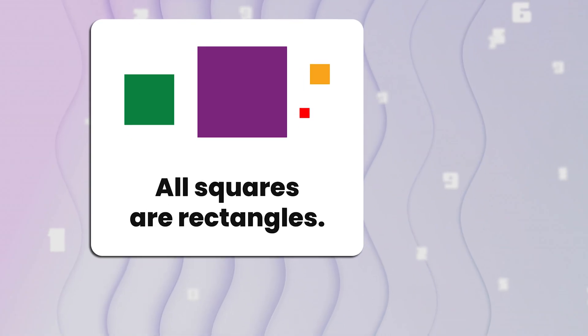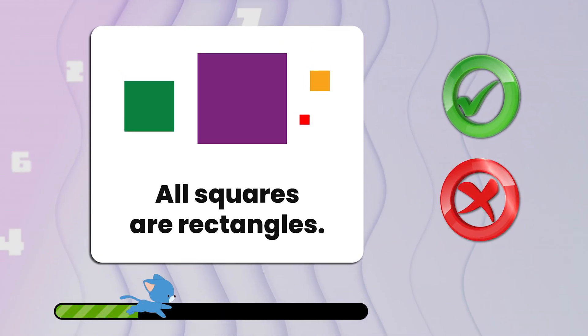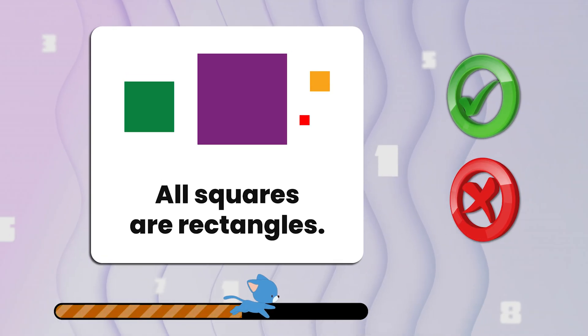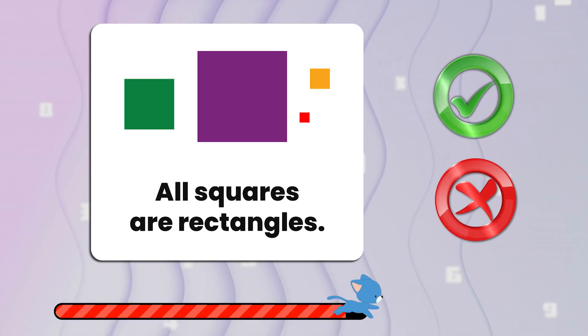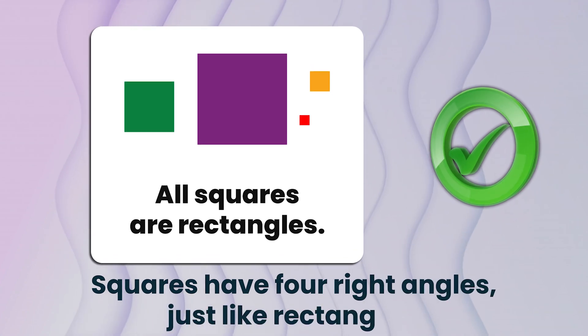Number three. All squares are rectangles. True or false? That's true. Squares have four right angles, just like rectangles.